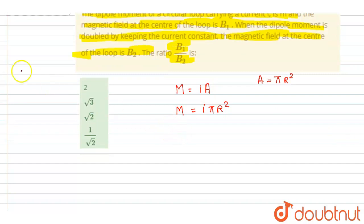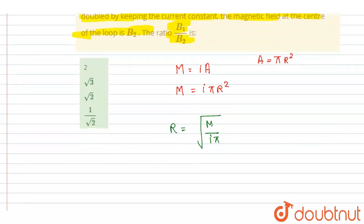You can get r from here. So I will write r equals square root of M/(Iπ). Now, if I talk about the magnetic field at the center, we know that it equals μ₀I/2r.